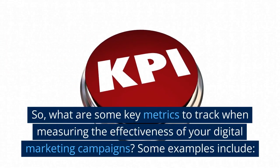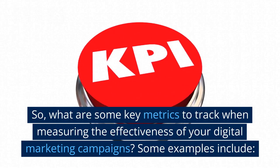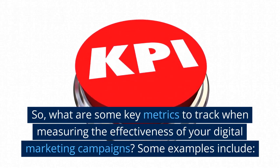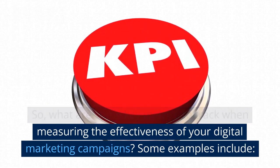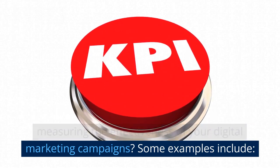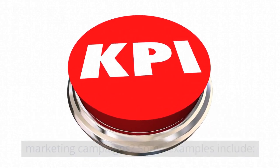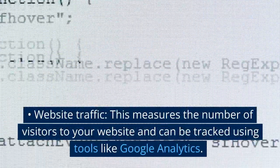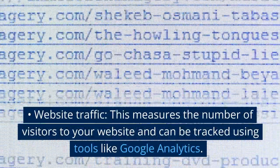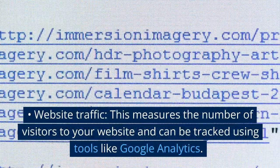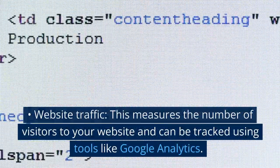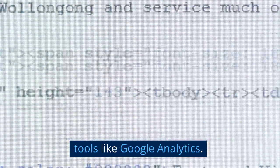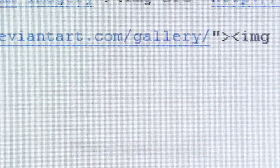What are some key metrics to track when measuring the effectiveness of your digital marketing campaigns? Some examples include Website Traffic, which measures the number of visitors to your website and can be tracked using tools like Google Analytics.